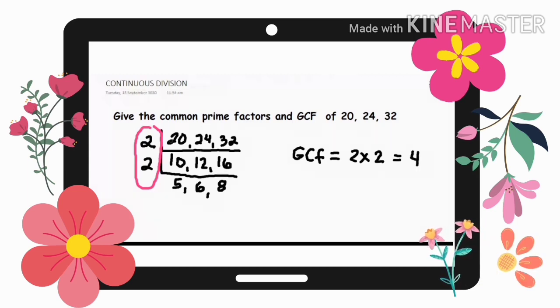So, ang common prime factors ng 20, 24, and 32 ay yung 2. Then, imultiply natin yung mga common prime factors nila to get the GCF. Then, 2 times 2 is equal to 4. So, the GCF is 4. So, mahalaga na alam natin ang pagkuhan ng GCF kasi ginagamit natin ang GCF sa paglo-lowest term ng fraction.